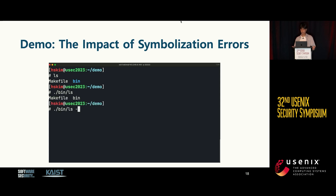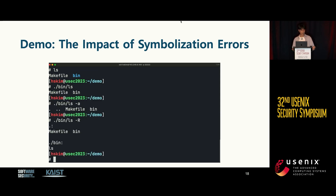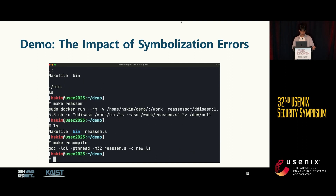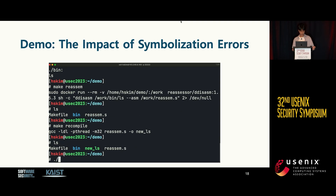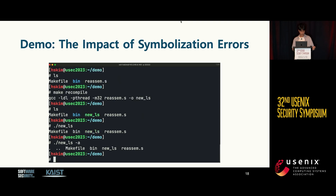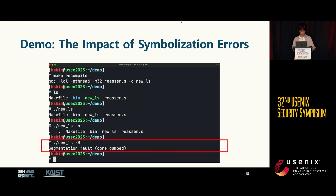Let me show a demo video to illustrate the impact of symbolization errors. In the video, we reassembled a binary using DDISASM. The reassembled program seemed to work properly at first. However, the program crashed when given a certain input. This demo highlighted that symbolization errors can cause unintended program behavior under specific conditions. Consequently, symbolization errors reduce the overall reliability of reassembly results, even if some errors do not necessarily influence every execution.